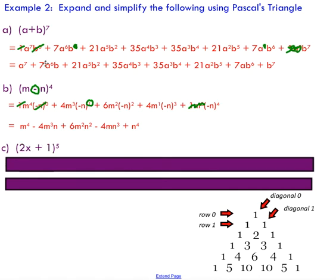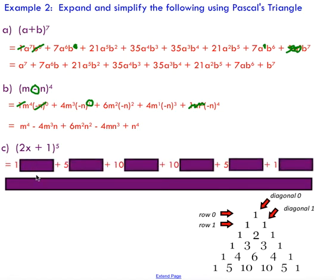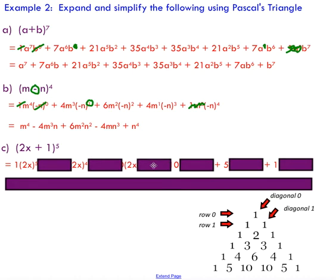The last example is a little more intense. I've changed m for 2x — now I've got a numerical coefficient attached to my variable — and I've replaced the second term with just the number one. Let's see how this affects our expansion. We're dealing with row five, so we write our coefficients: one, five, ten, ten, five, one. I take the first term 2x, put it in brackets, and raise it to decreasing powers — just like I did with a and m. But this time I have 2x inside the brackets, so it's important to keep that in brackets as I systematically work my way down from 2x to the power of five down to 2x to the power of zero.